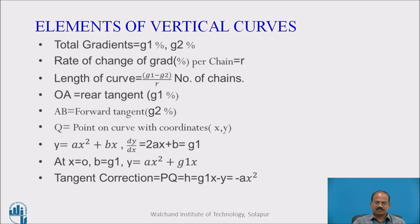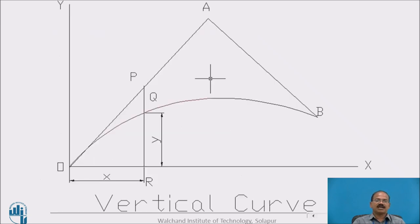If we will see the sketch, you will find that there is a curve which is starting from O. There is a straight actually starting from O reaching to A, and the gradient of this particular straight is assumed to be G1 percent. There is another straight going from A to B which is having a gradient G2. While ensuring the safety of the vehicle and comfort of the passenger, it is never recommended to have the movement like this.